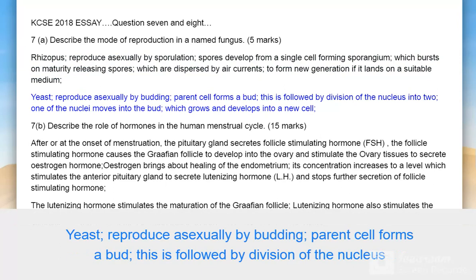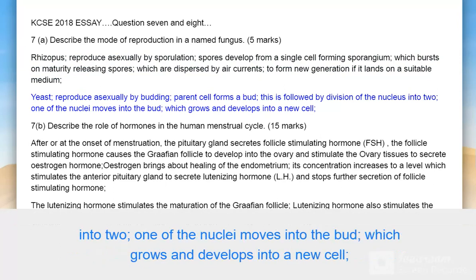Yeast reproduces asexually by budding. The parent cell forms a bud, followed by division of the nucleus into two. One of the nuclei moves into the bud, which grows and develops into a new cell.